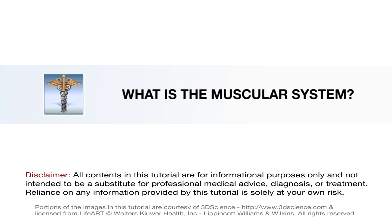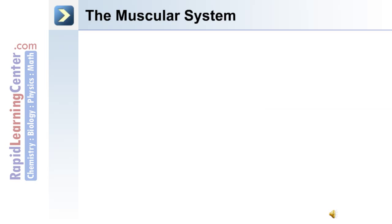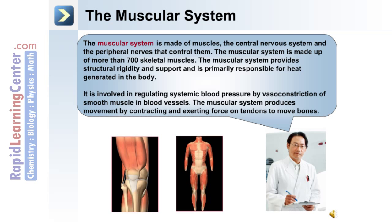Let's begin with an overview of the muscular system. The human muscular system is made up of muscles, the central nervous system, and peripheral nerves that control those muscles. The muscular system is made up of more than 700 skeletal muscles, and this system provides structural rigidity and support for the body and is primarily responsible for heat generated in the body.